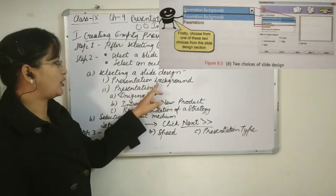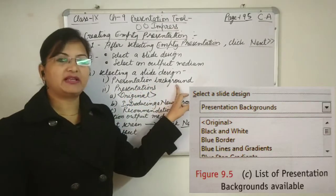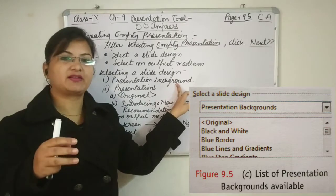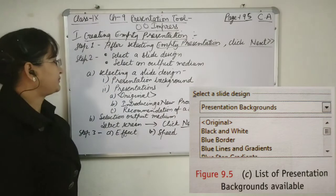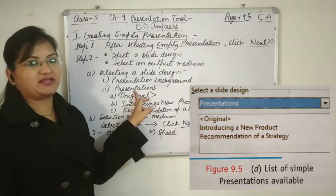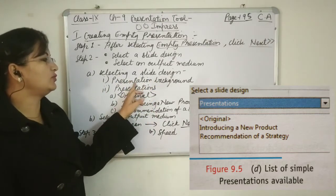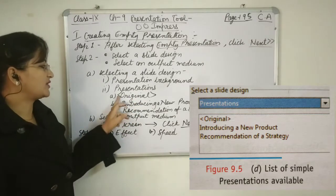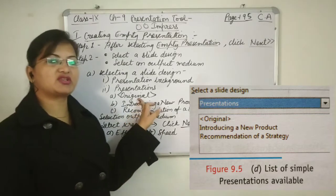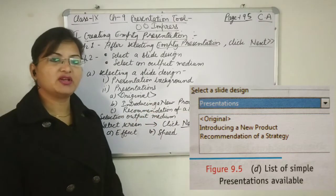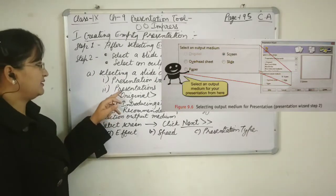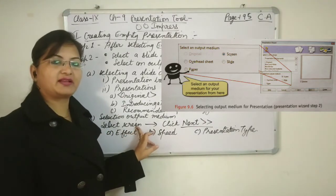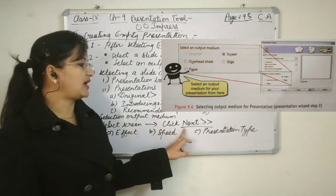When you select presentation background, the first option is Original — meaning no background. You can also choose various background options like powder, etc. The second option in the drop-down is Presentation, which shows already-created formats you can use and modify. Just after selecting the slide design, there is select output medium — by default, Screen is selected. You can select Screen to show the presentation on the computer screen, then click Next.